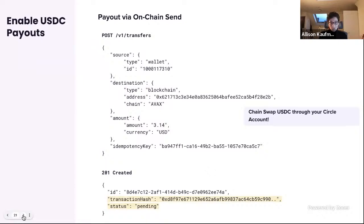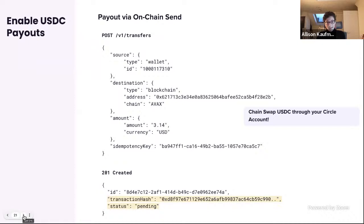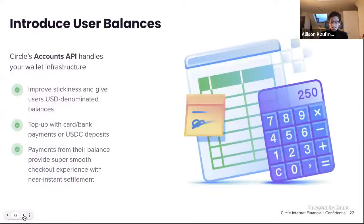For USDC transfers, you can send USDC out from your master wallet to an address on any of our eight supported chains. In our previous example we accepted USDC from an Ethereum deposit address, but we can actually send that same USDC out to an Avalanche deposit address. The Circle account works as an omnibus wallet that stores all your USDC and is blockchain-agnostic, so you can accept USDC from any of the eight supported chains and send it out to any wallet on those chains. This makes it super easy to accept payments and send payouts without having to balance separate USDC balances across different chains.